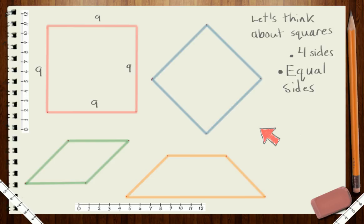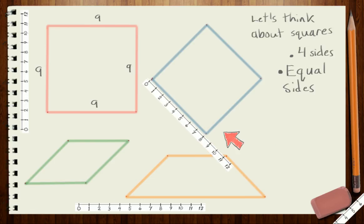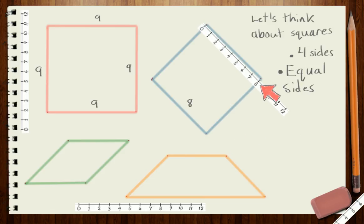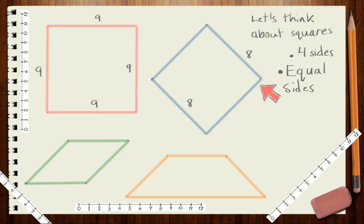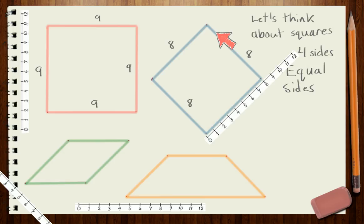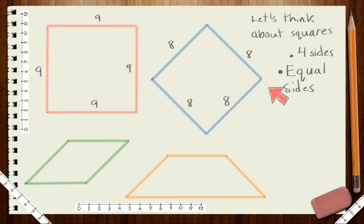What about the blue shape? Let's measure it. This side here has a side length of eight units, and its opposite side has a measure of eight units also. What about the other two sides? I see that it has a measure of eight units, and if I measure this side down here, I see that it has a measure of eight units as well. So, based on our rules, the blue shape could be a square.